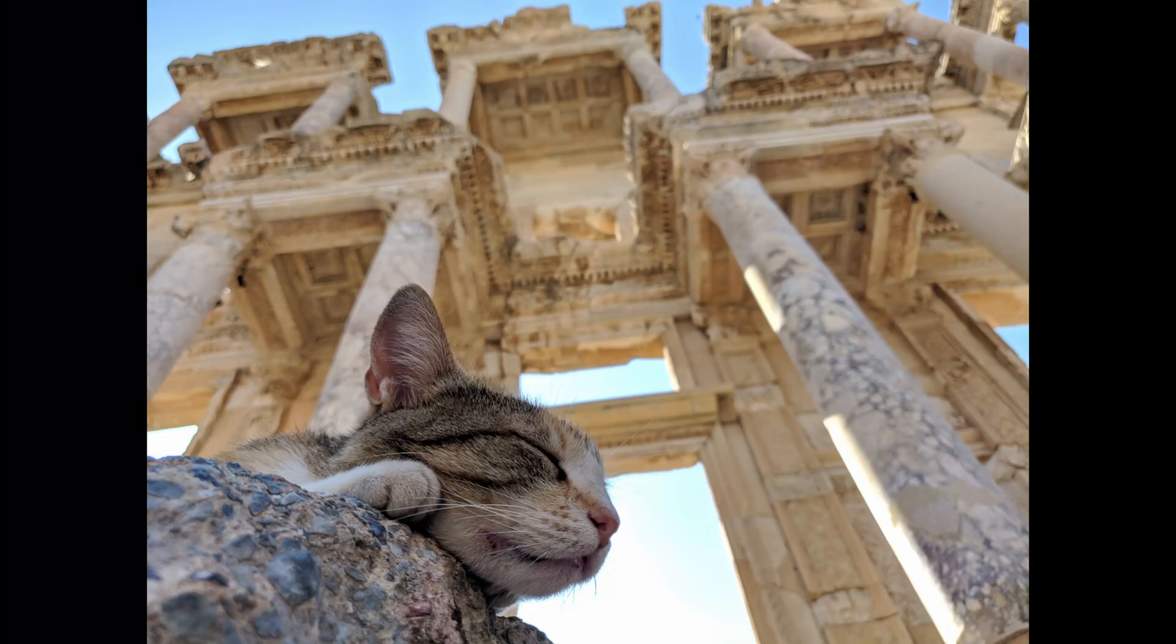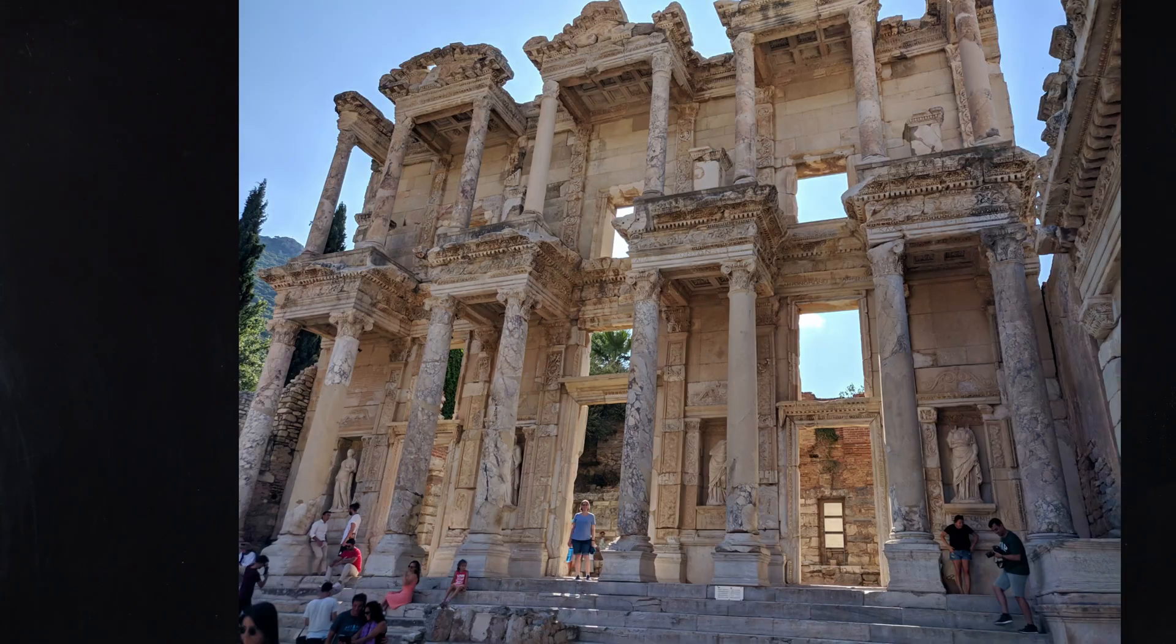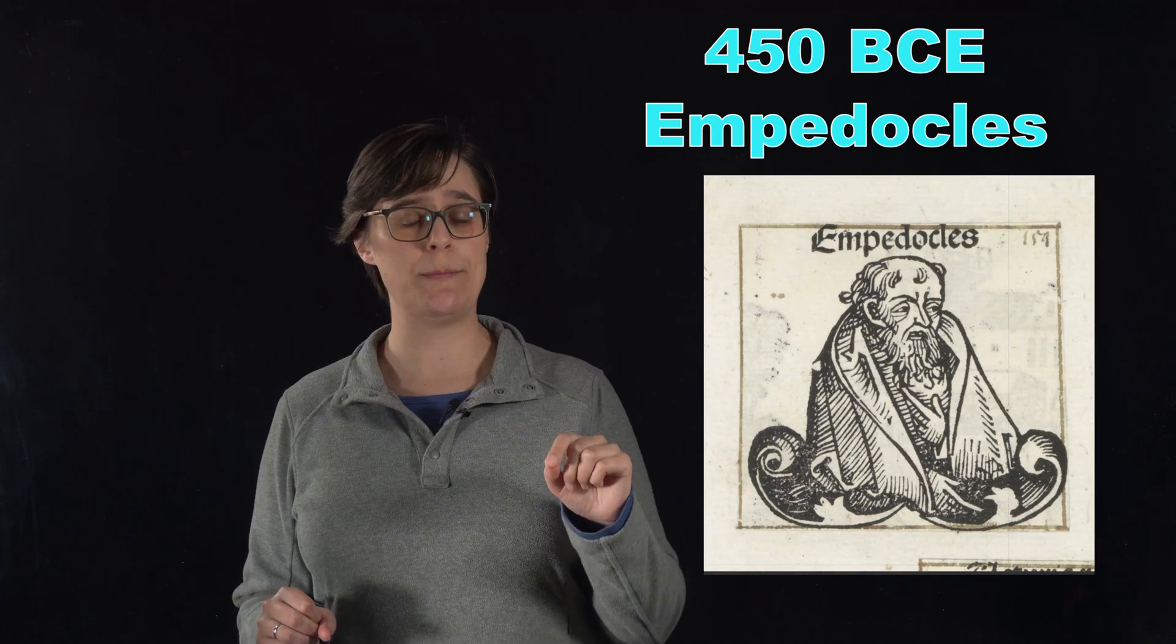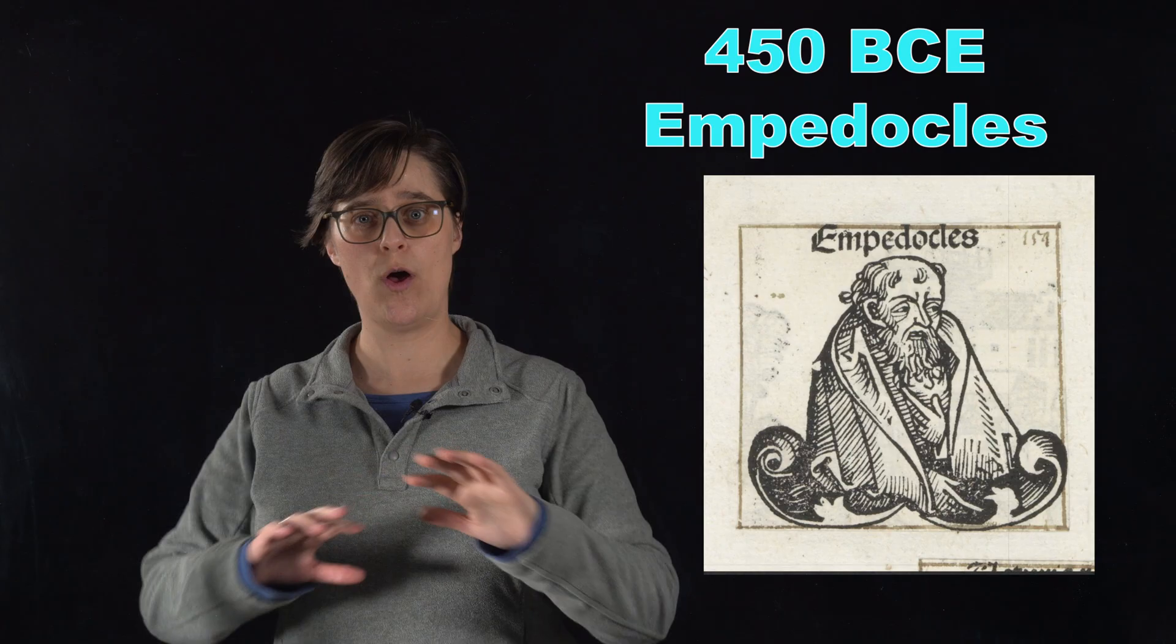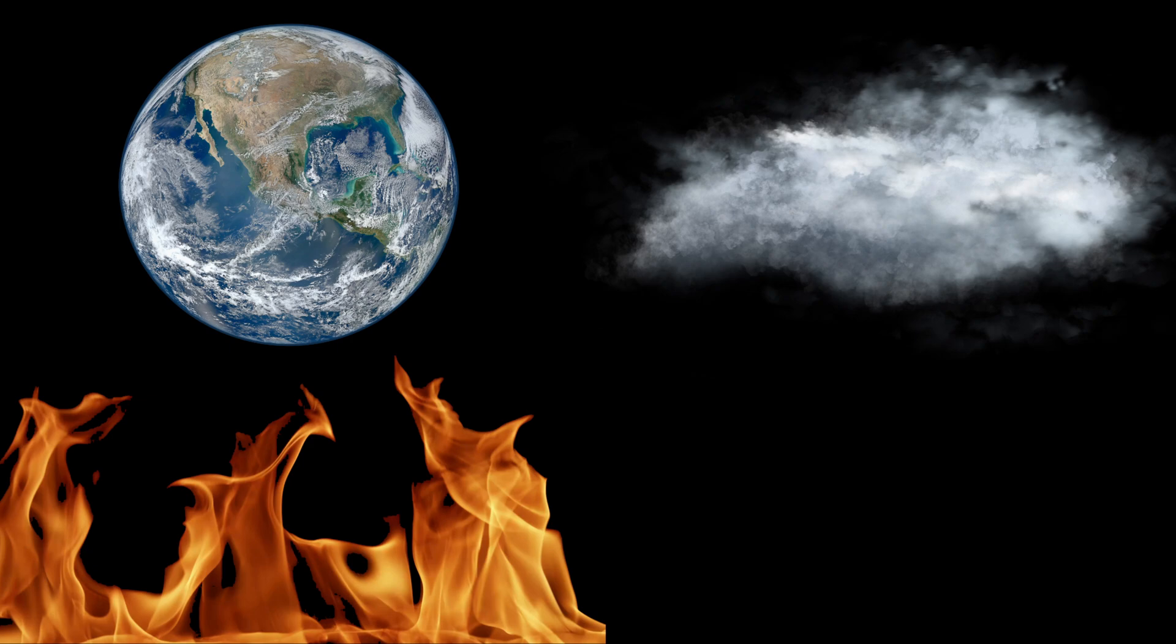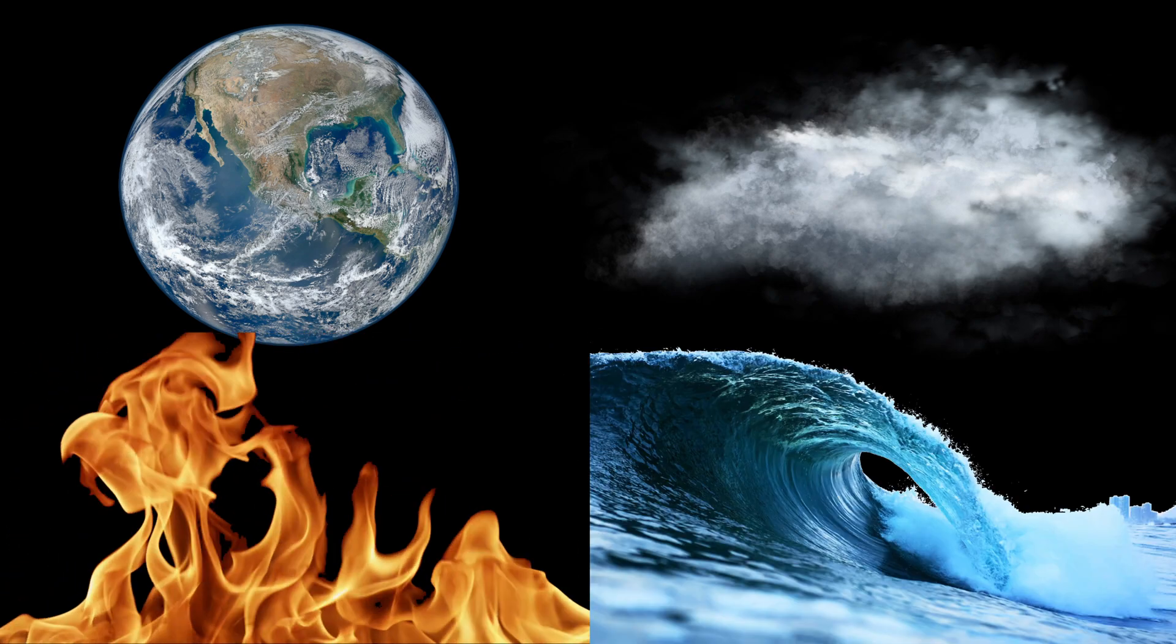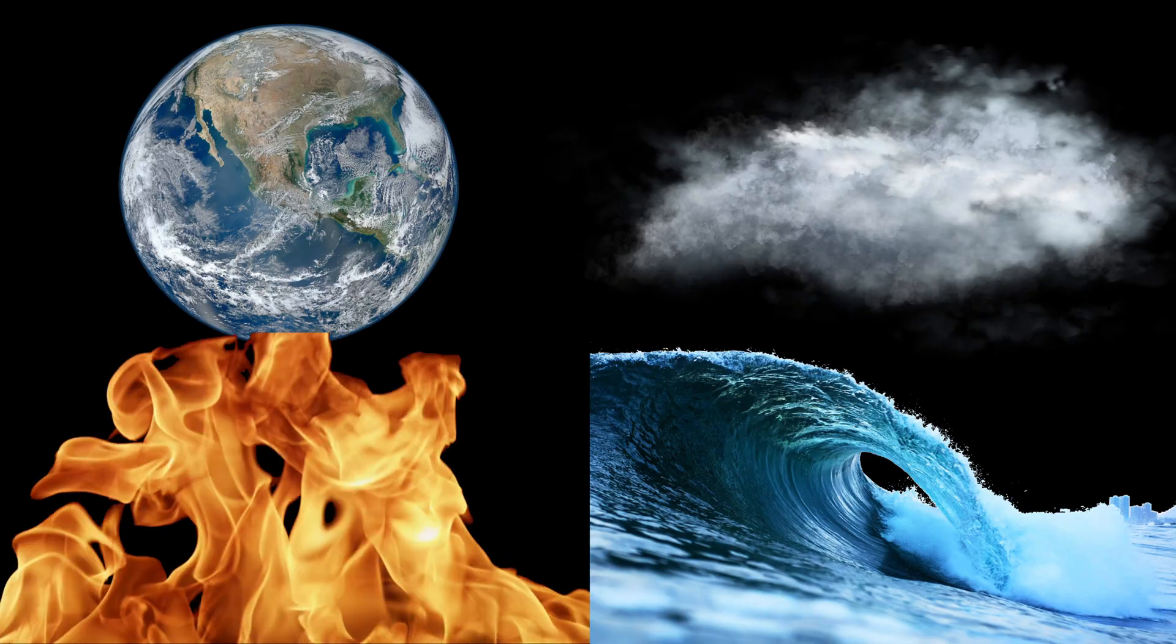Let's start with the ancient world. The year is about 450 BCE and we're in ancient Greece. The philosopher Empedocles proposed that all matter is composed of four fundamental elements: earth, air, fire, and water. He believed that these elements combined in different ways to form everything in the universe.